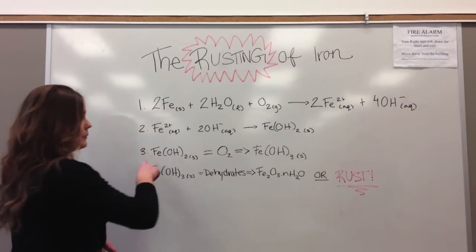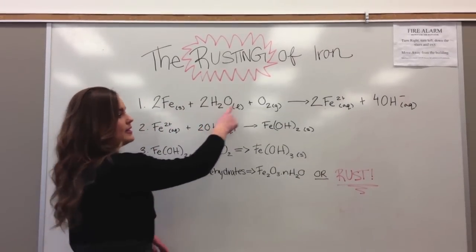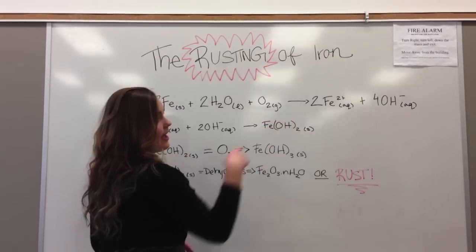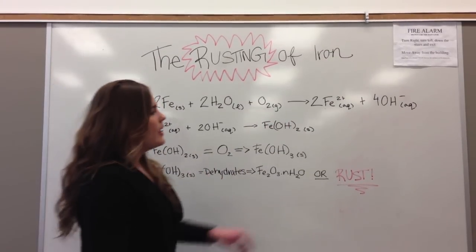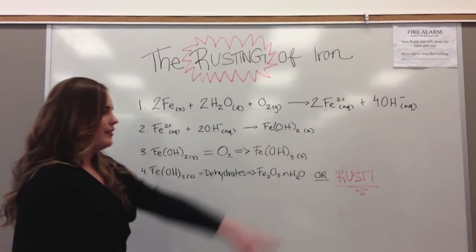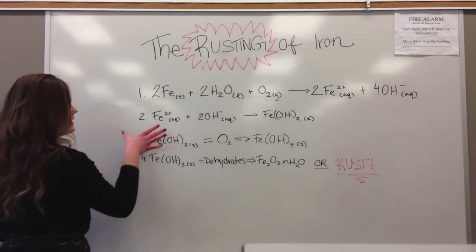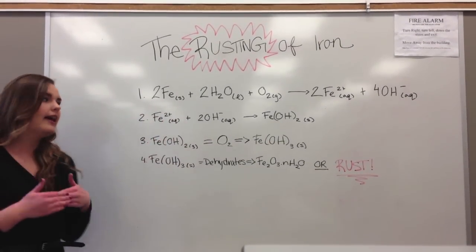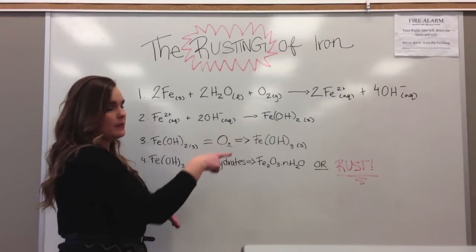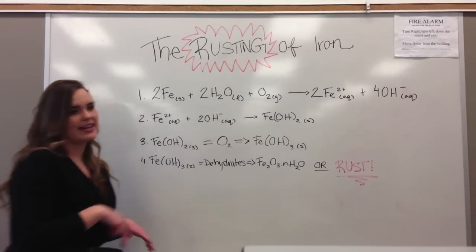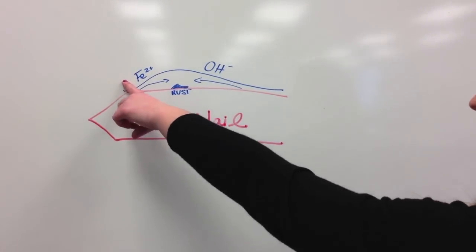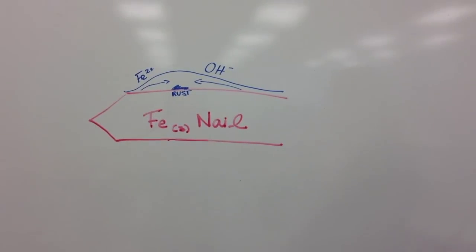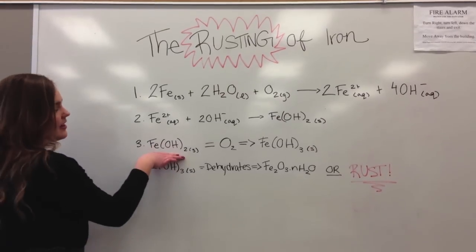It's going to combine with the water in the environment as well as the oxygen in the environment to become oxidized to Fe2+, which is an ion, as well as the hydroxide ion. So the Fe2+ and the hydroxide ion are actually going to combine and form a precipitate, which is iron 2-hydroxide. Here's our Fe2+ ion and our hydroxide ion forming together to form the solid, which is our iron hydroxide.